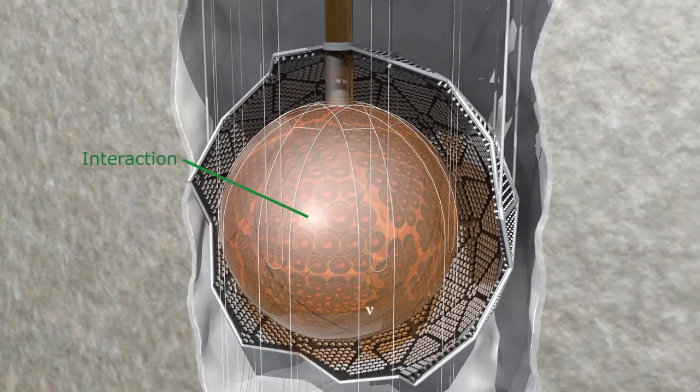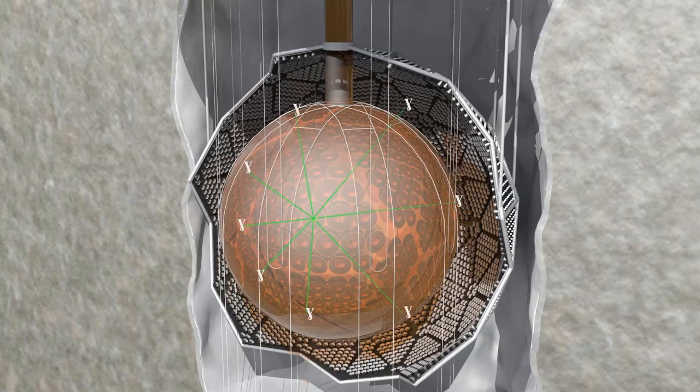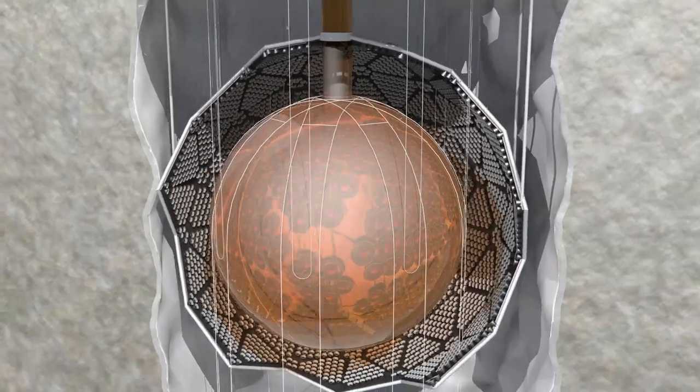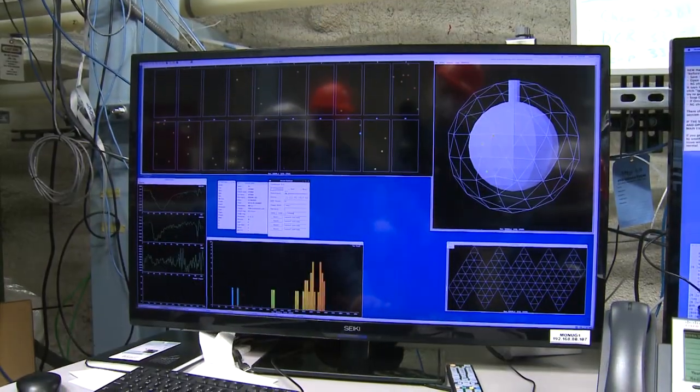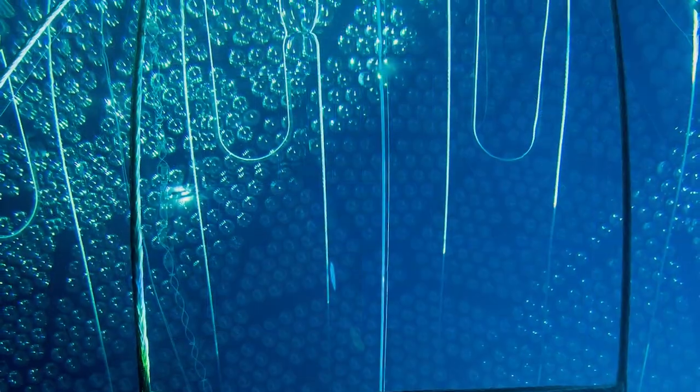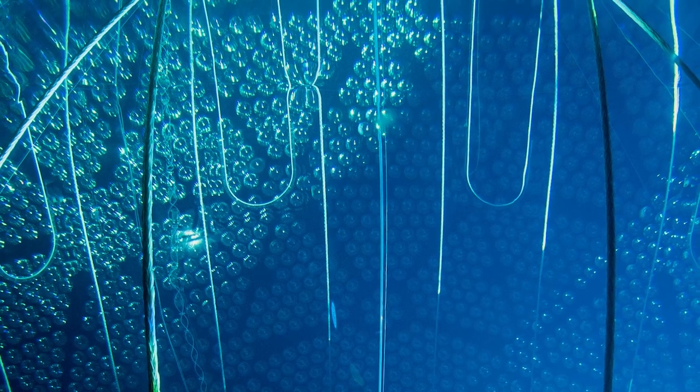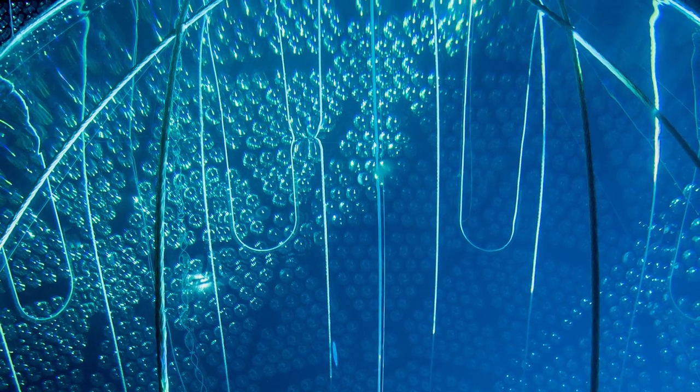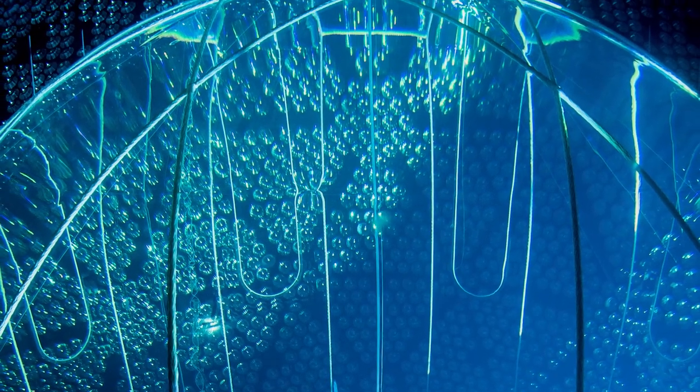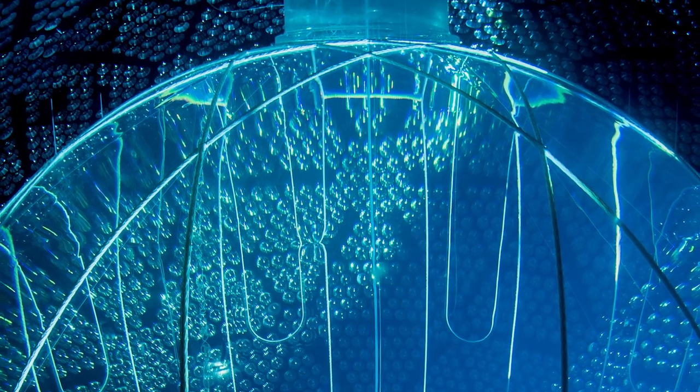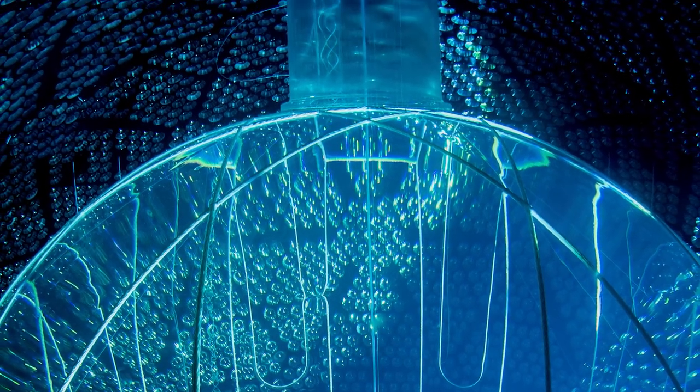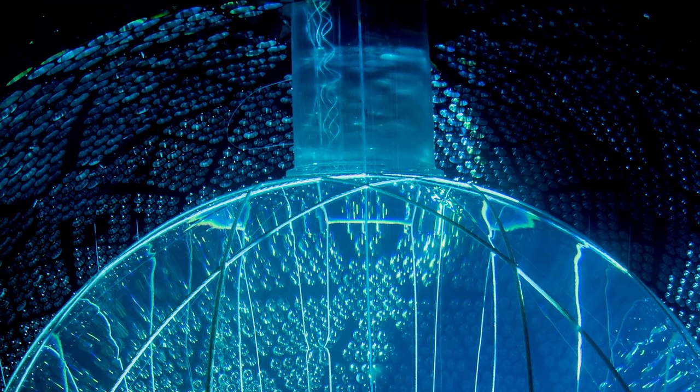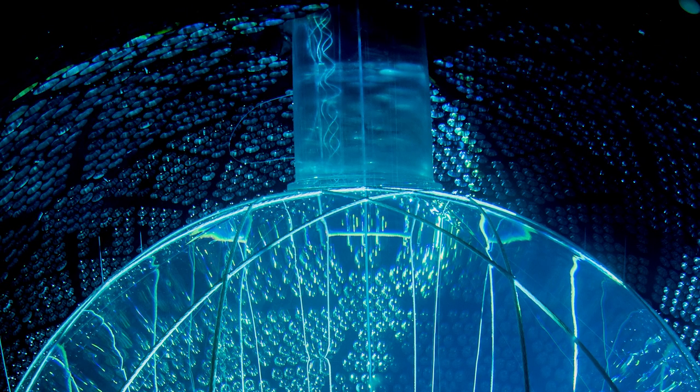When a neutrino hits the scintillator in just the right way, it makes a flash and gives off photons of light. These photons get turned into electric signals by the photomultiplier tubes, which are then recorded as our data. In order for the photon to get from the spot where it's emitted to the photomultiplier tubes, it has to pass through the rest of the scintillator. If this liquid isn't perfectly clear and colorless, that photon could get absorbed or otherwise intercepted and not detected.